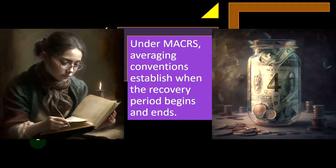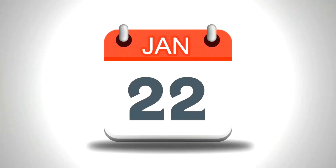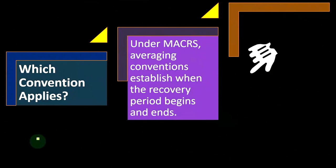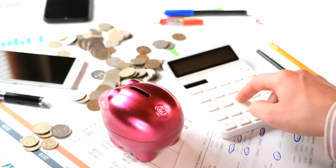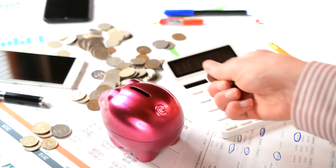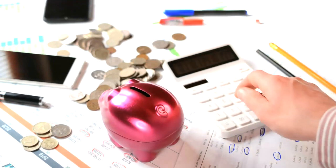What happens if you buy the property in the middle of the year? Obviously you're not always going to buy it on January 1st. Are there conventions we can use? For example, we might just assume the property was bought in the middle of the year, which makes the calculation easier than trying to use the exact number of days and a ratio analysis.